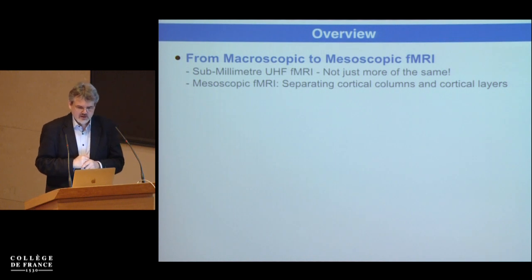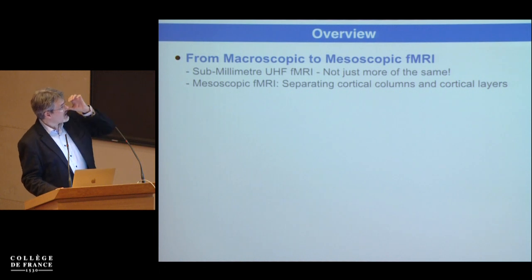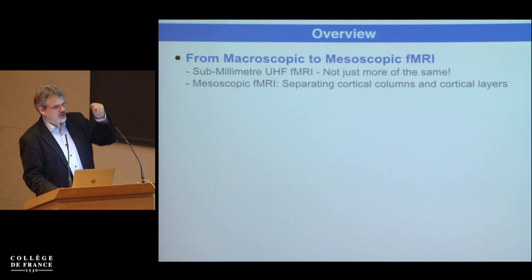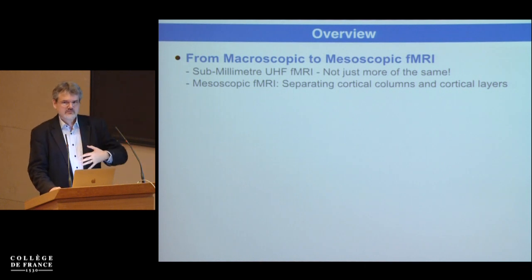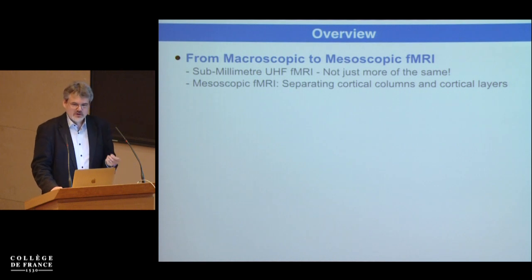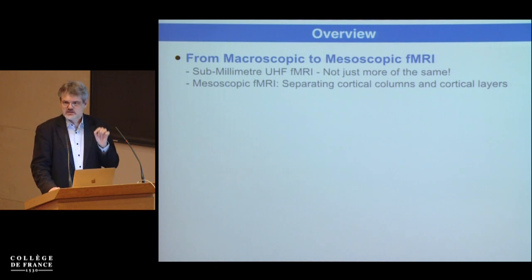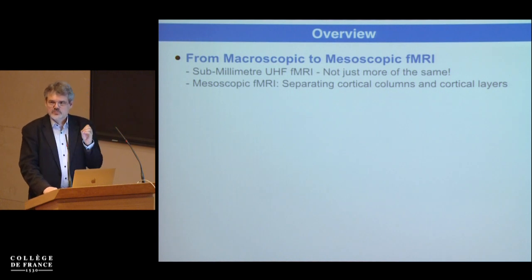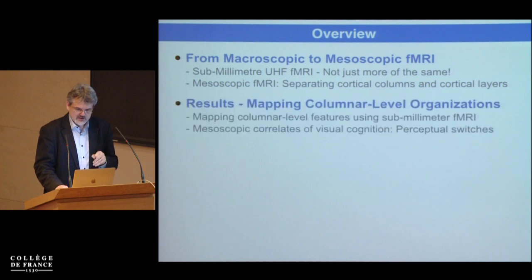High field imaging is important not simply because it gives the same results with a bit more signal. My argument is that pushing to high field imaging with a bit more resolution means we suddenly see a completely different organization of the brain. It's a qualitative change achieved by pushing the spatial resolution of fMRI.